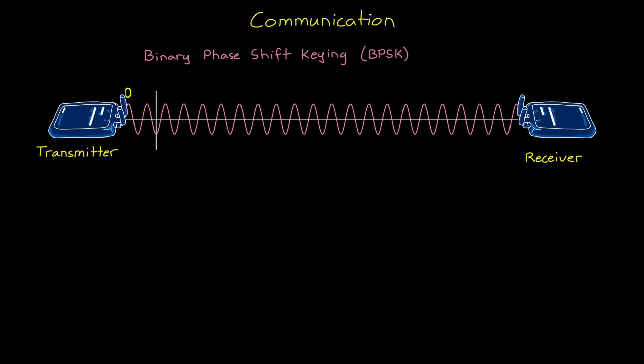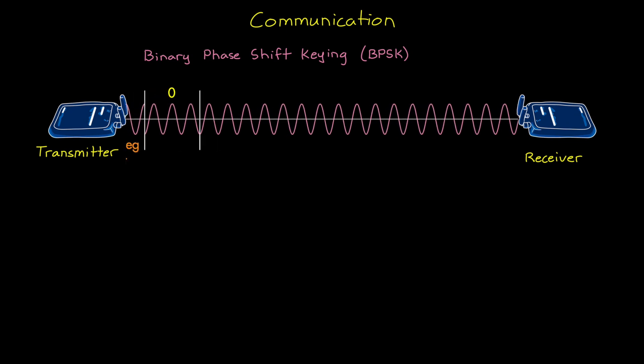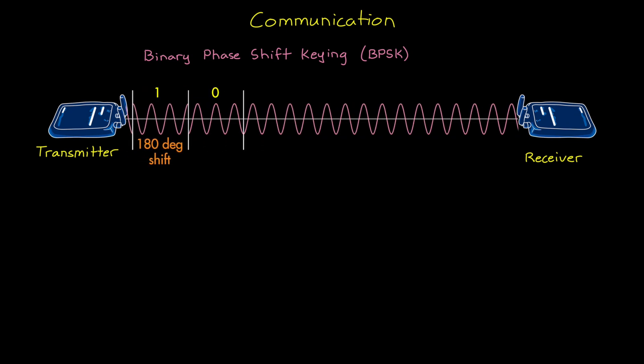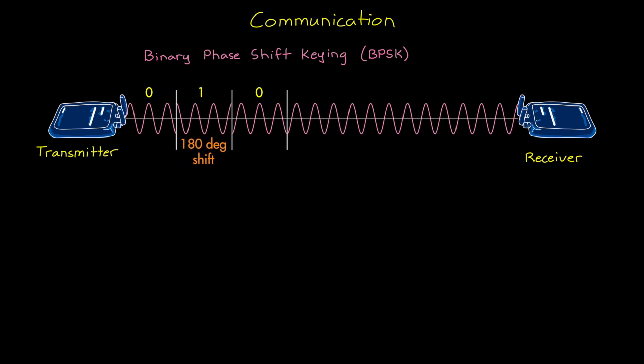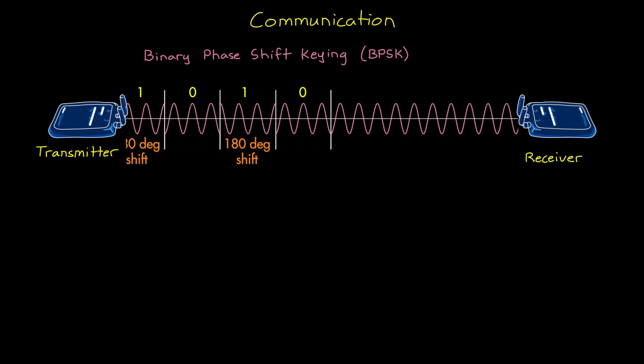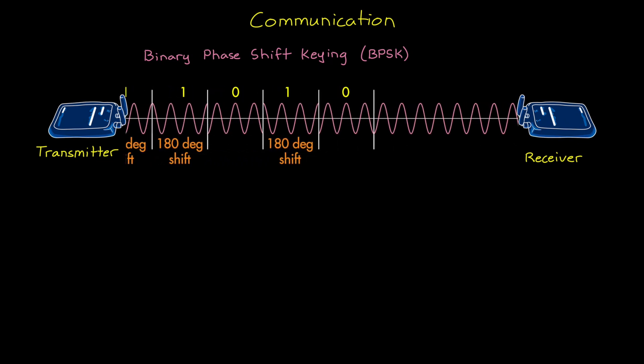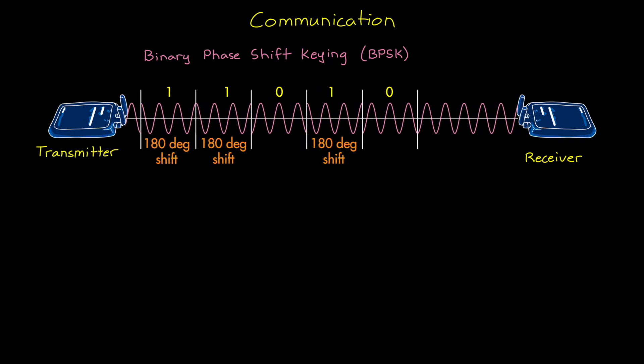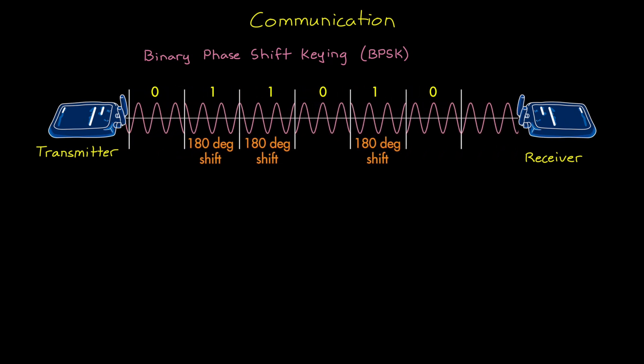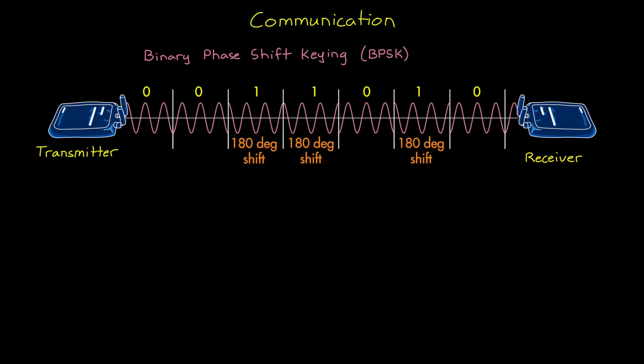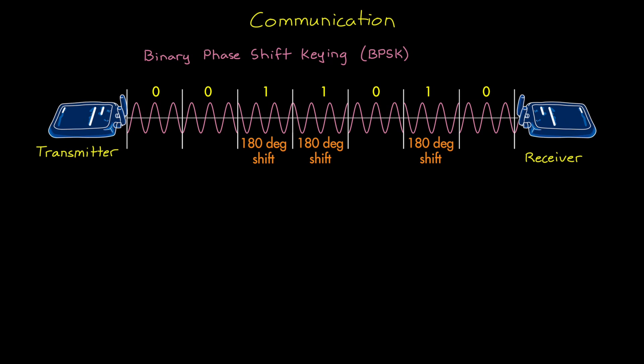Simply put, if the transmitter is sending a zero, then the phase of the carrier signal is unaffected. And when a one is sent, the phase is shifted by 180 degrees. As long as both the receiver and the transmitter are expecting the same setup, that is the same carrier frequency, modulation scheme, and waveform parameters, then the information can be decoded correctly at its destination.